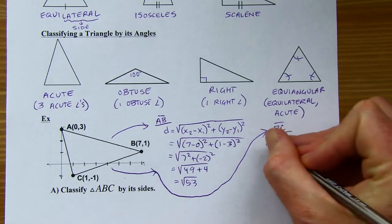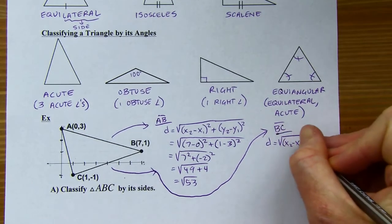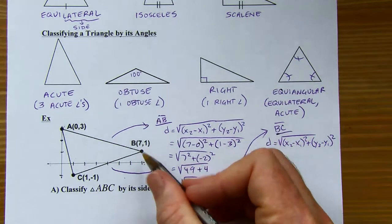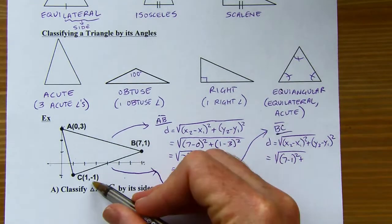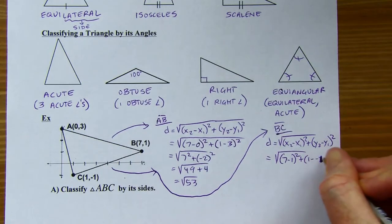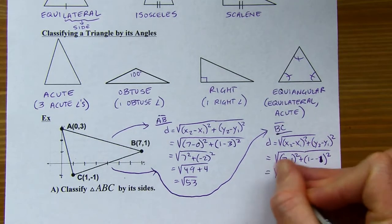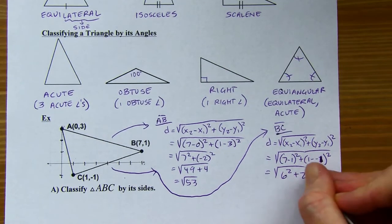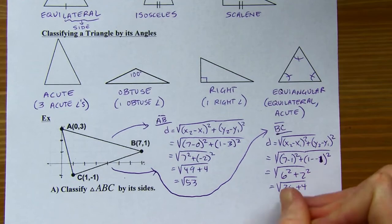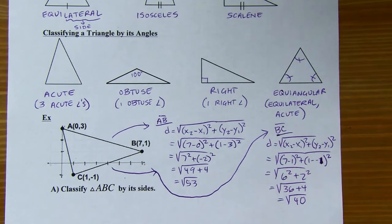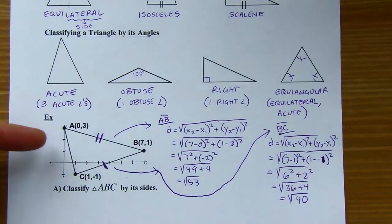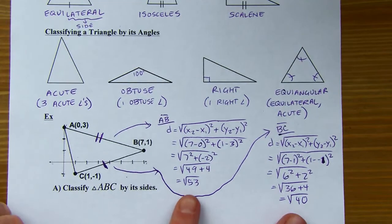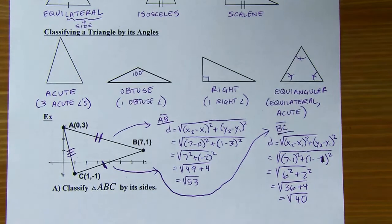Using the distance formula again for BC: for x's, 7 minus 1; for y's, 1 minus negative 1. That gives me 6 squared and 2 squared, so the square root of 40. Now I know these two sides are not congruent. And the third side will also come out to something different than root 40 or root 53. So this triangle is scalene — that is my classification by the sides.